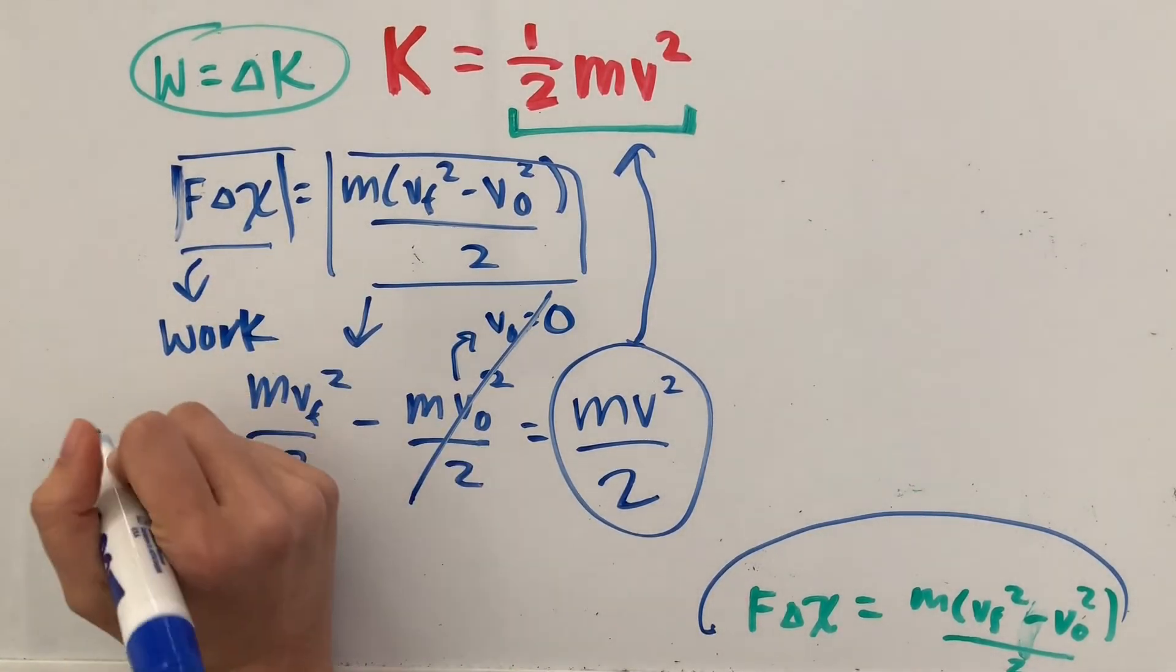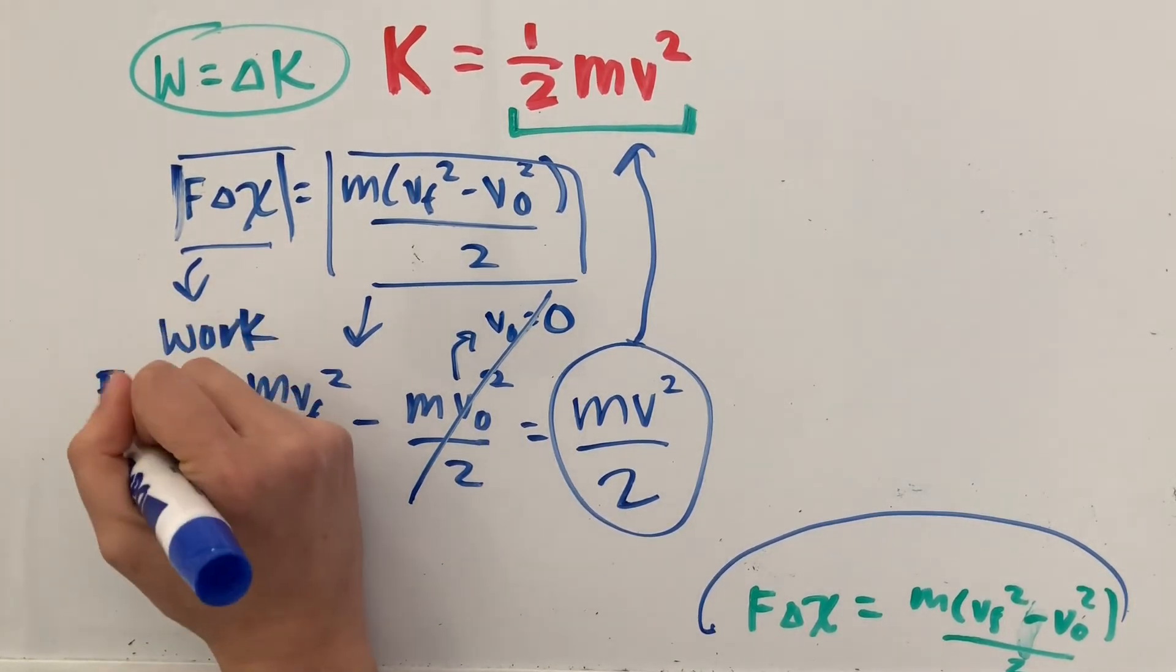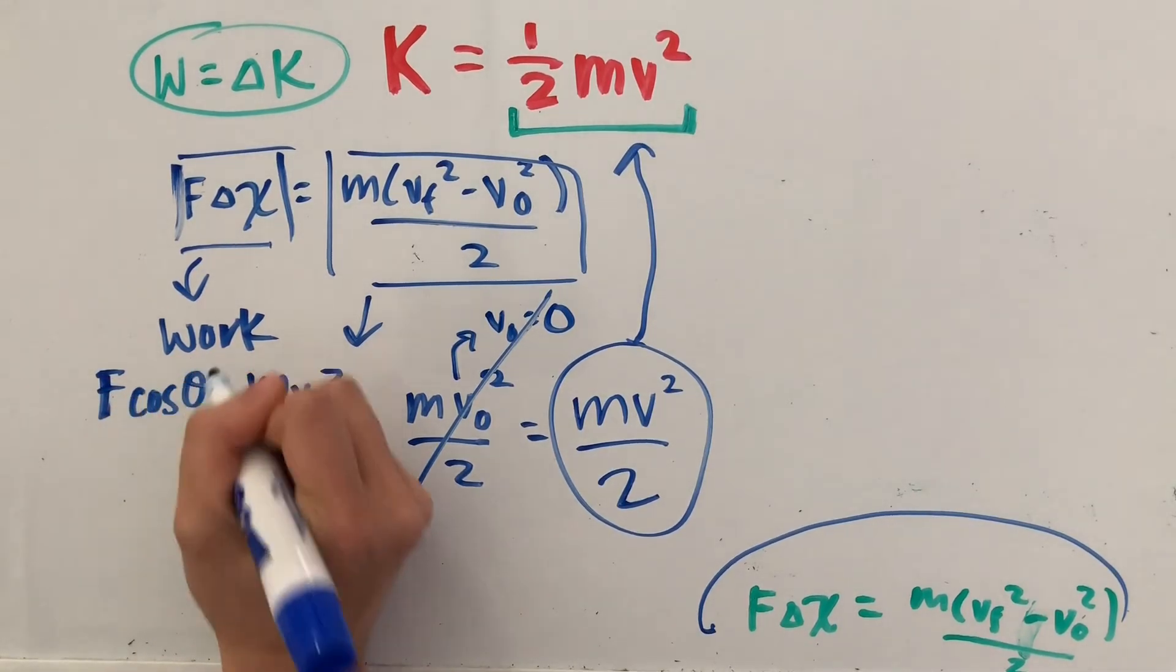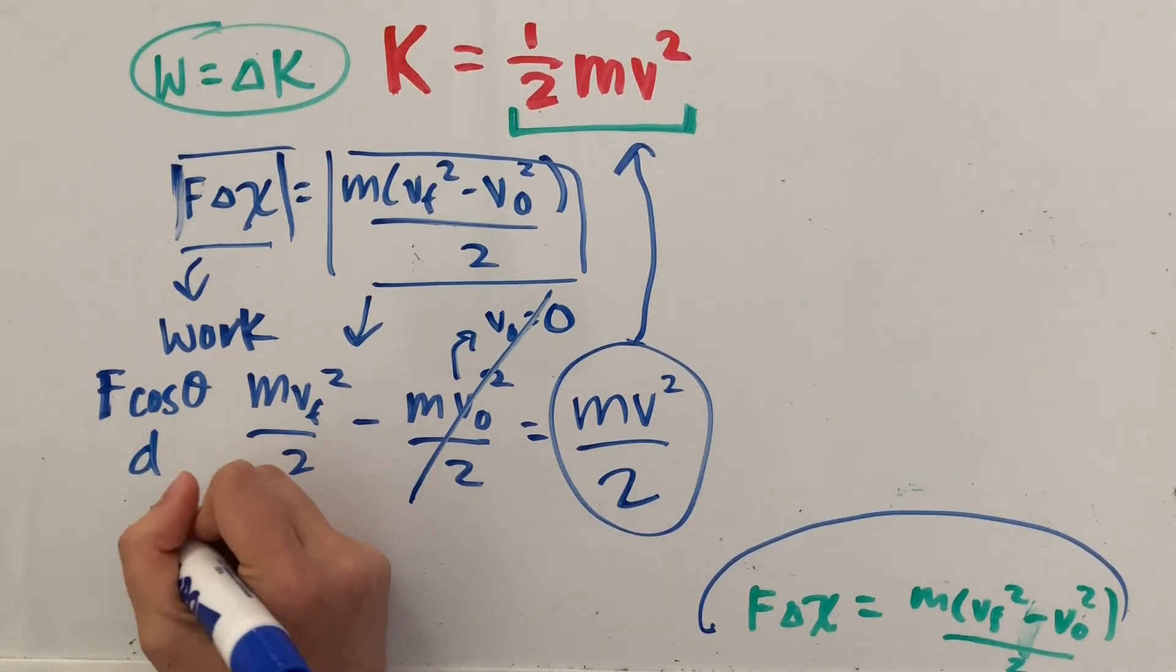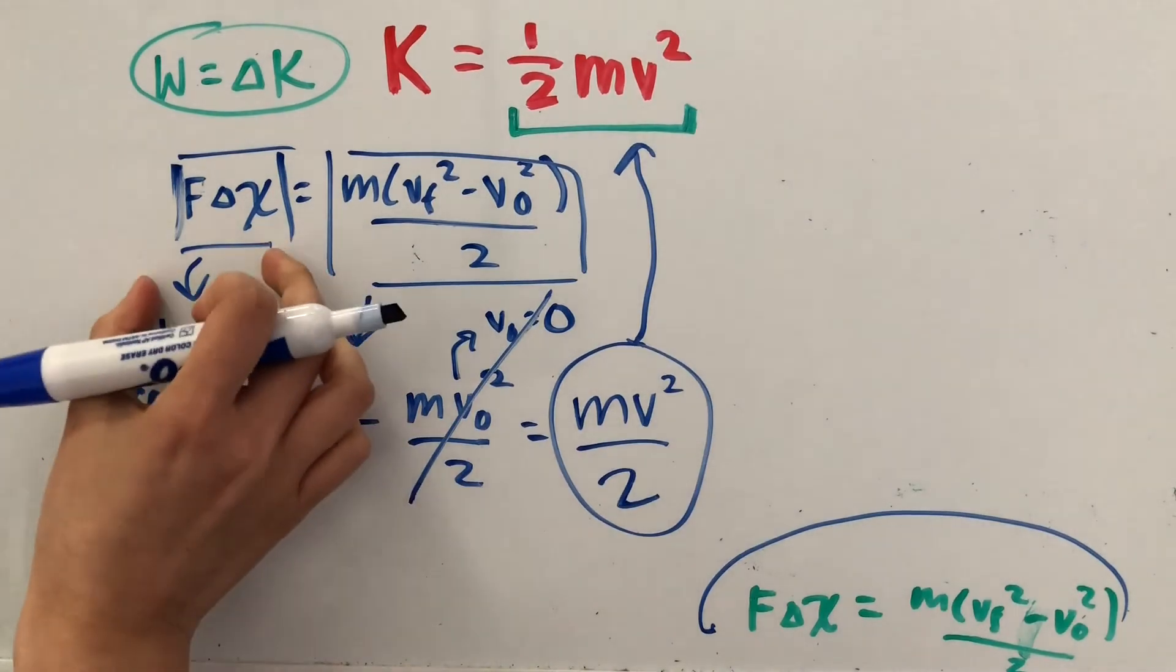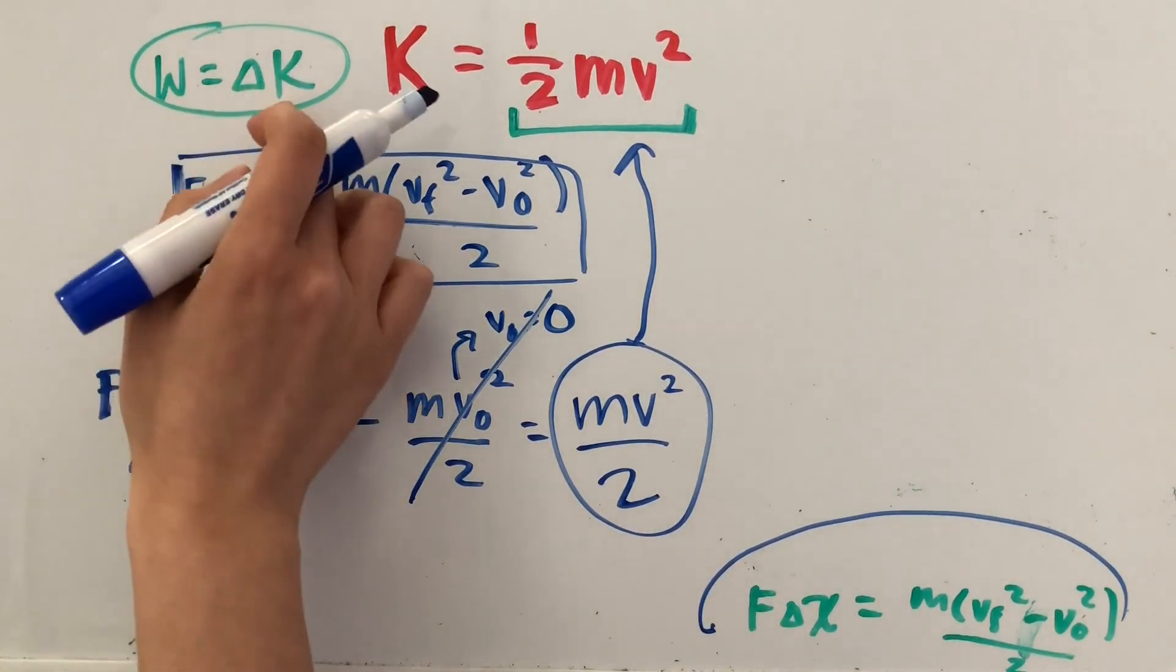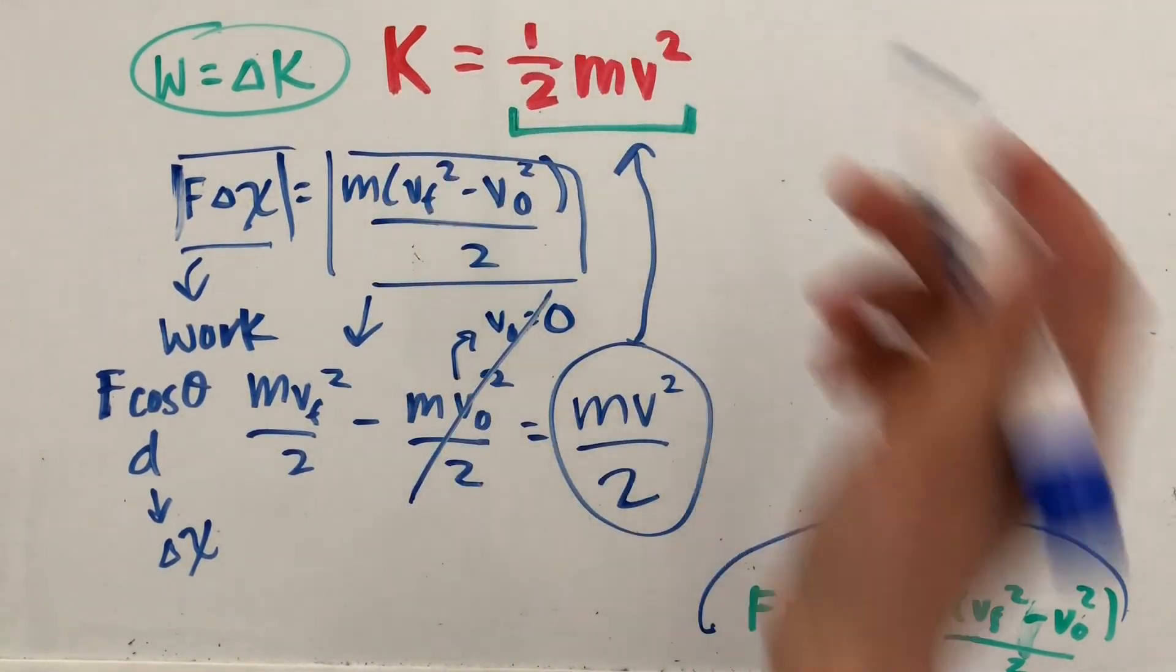I went over this in a previous video, and I said that work is equal to the parallel force, which can be written as f cosine theta, times the distance. And distance, d, can also be written as delta x. So really, it's saying that work is equal to this, and since you know that work is equal to the change in kinetic energy, kinetic energy is equal to 1 half mv squared.